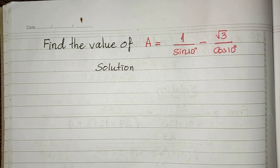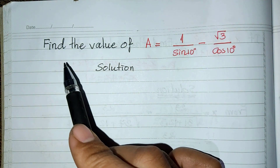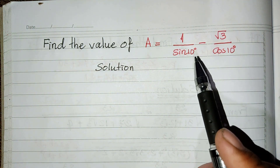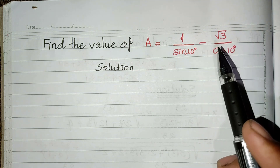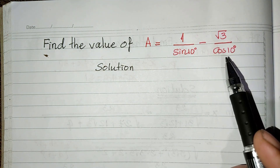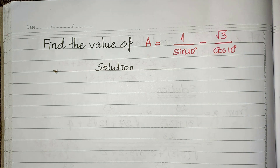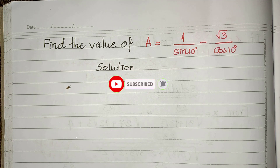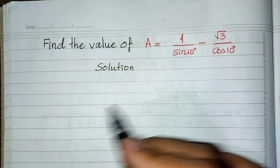Hello everyone, welcome to my YouTube channel. Today I have one exercise: find the values of expression A, which equals 1 divided by sine of 10 degrees minus square root 3 divided by cosine of 10 degrees. Do you know how to solve this? If you normally do it already, please come back to watch my video from beginning to end to verify your solution. Before we go to the solution, please don't forget to subscribe to my channel for more exciting videos. Now we go to the solution together.